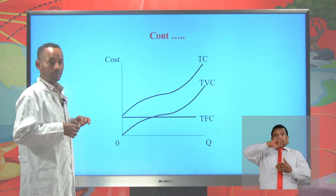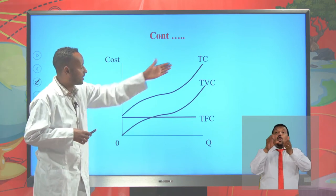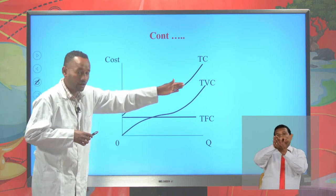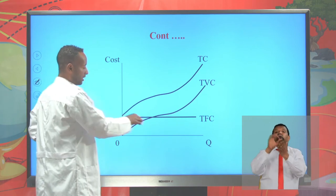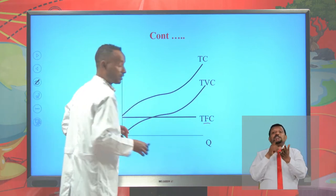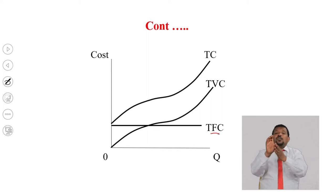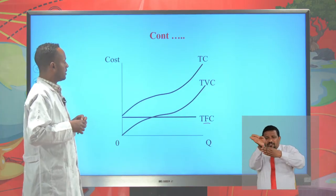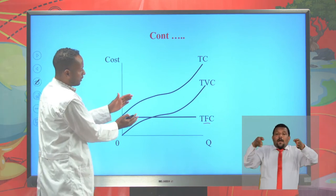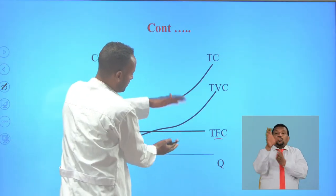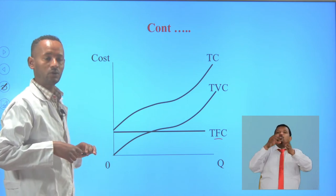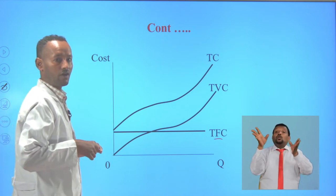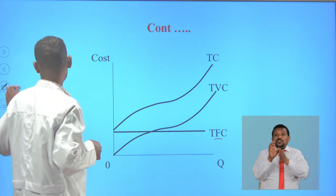Graphically, this is the total cost curve and this is the total variable cost curve. This is the total fixed cost curve, which is a horizontal straight line. The gap between the total cost and the total variable cost is the total fixed cost, because the total cost is the sum of the total variable cost and the total fixed cost.